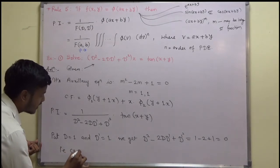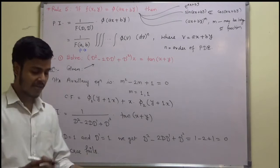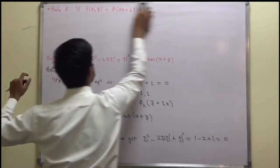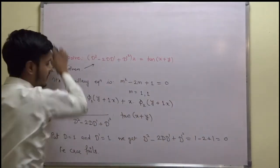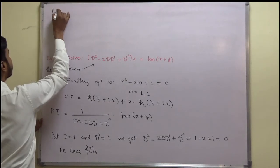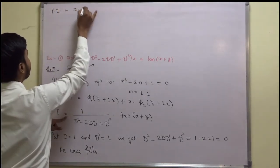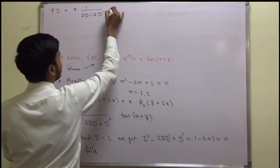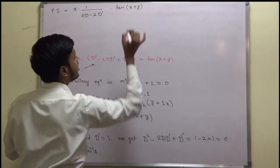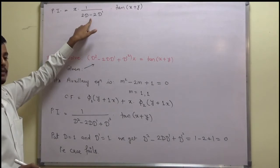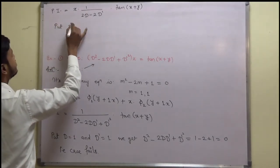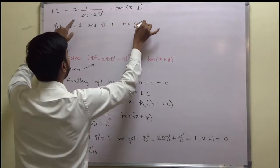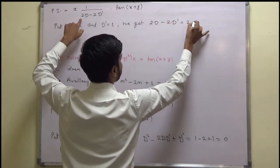Whenever the case fails, we apply the case of failure. PI becomes: multiply the numerator by x and differentiate the denominator with respect to D. So the denominator becomes 2D - 2D', giving x · tan(x + y) over (2D - 2D'). Substituting D = 1 and D' = 1 again: 2(1) - 2(1) = 0. Again the case fails.